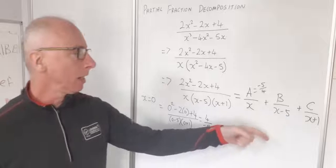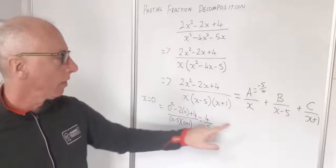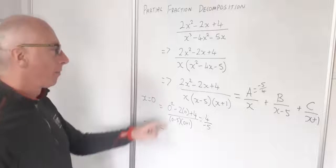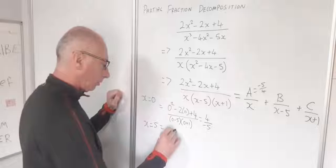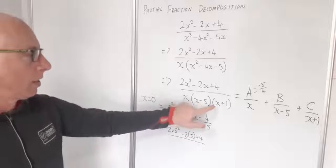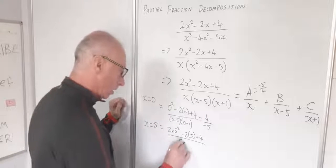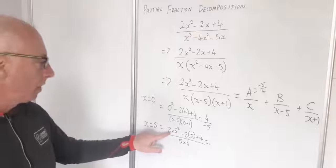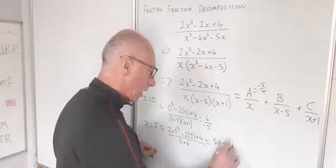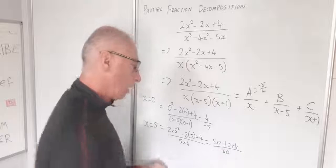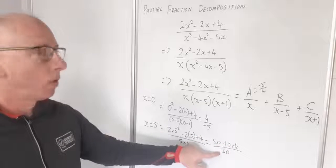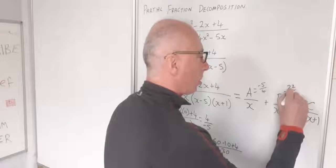Now for B, I use x equals 5. Plugging x equals 5 into the numerator: 2 times 5 squared minus 2 times 5 plus 4 equals 50 minus 10 plus 4 equals 44. The denominator with the x minus 5 term covered up gives 5 times 5 plus 1 equals 5 times 6 equals 30. So B equals 44 over 30, which simplifies to 22 over 15.